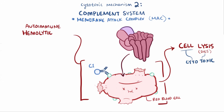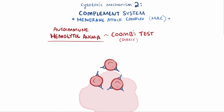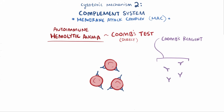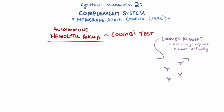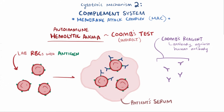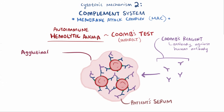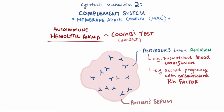If you suspect autoimmune hemolytic anemia, the antibody in question can be detected using a direct Coombs test. The person's red blood cells are separated from the plasma and mixed with Coombs reagent — anti-human globulin, basically an antibody against human antibodies. If the red blood cells agglutinate or clump up, that means they probably had antibodies on their surface. There's also an indirect Coombs test, usually done to check for blood group incompatibility, where the patient's serum is mixed with lab red blood cells of known antigens and then with Coombs reagent. Agglutination indicates antibodies or complement in the serum, for example, from a mismatched blood transfusion or a second pregnancy with a mismatched Rh factor.